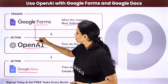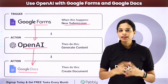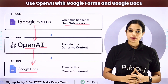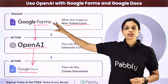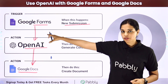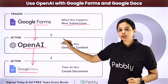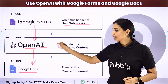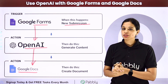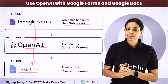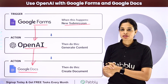To do this, you will have to integrate three applications, and the same thing can be done using Pabbly Connect software. Your trigger application would be Google Forms, then your action application would be OpenAI, and then Google Docs. You can integrate and automate this entire process yourself.